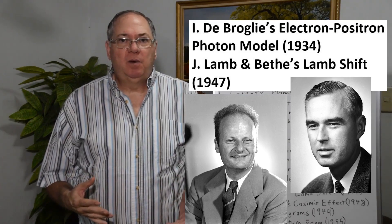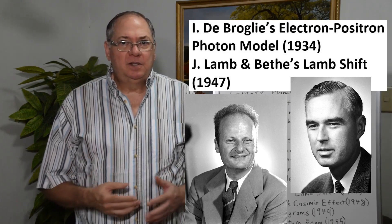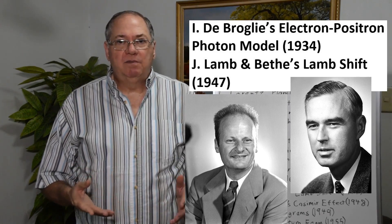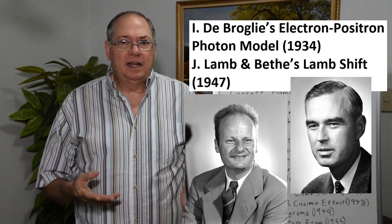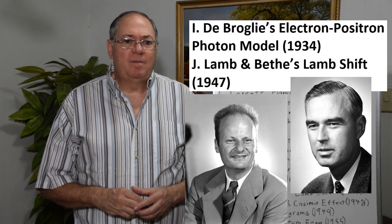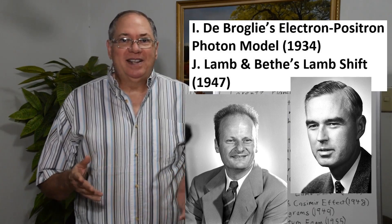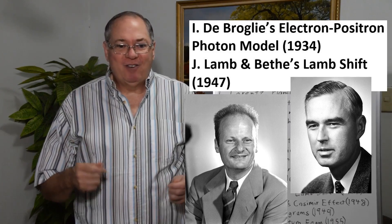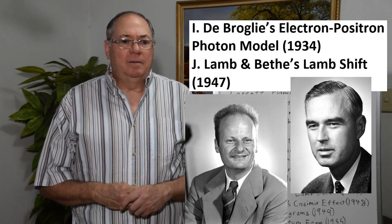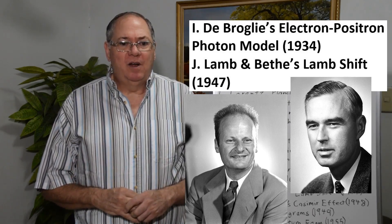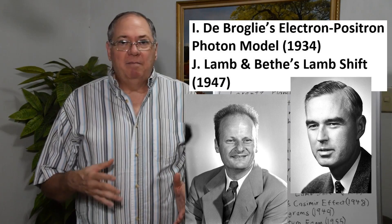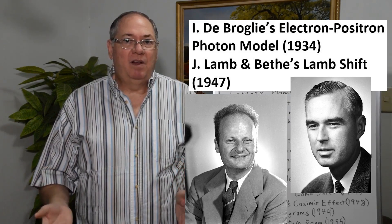There was a break in advancement during World War II, but after the war some key work continued. One of the big ones was the Lamb shift, developed by Lamb and Bethe. Lamb did the experiments and in 1947 published the results; in 1955 he won the Nobel Prize for it. Hans Bethe, after reading the results, famously did the calculation on a scrap of paper on a train trip. He was the Nobel Prize winner in 1967 for other work and had a wonderful career all around. Bethe's idea involved an interaction that included quantum fluctuations.